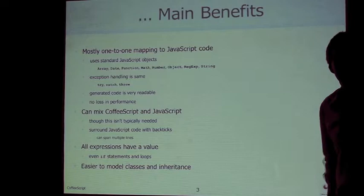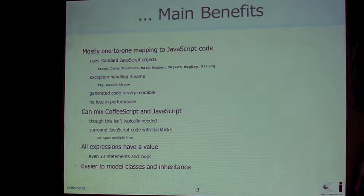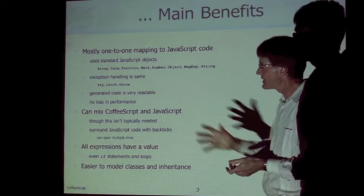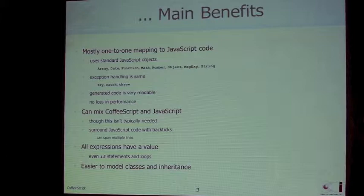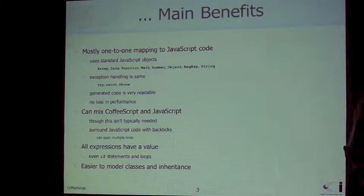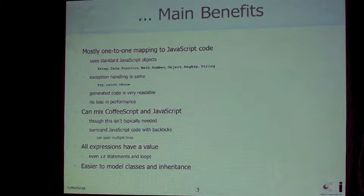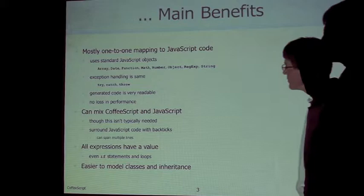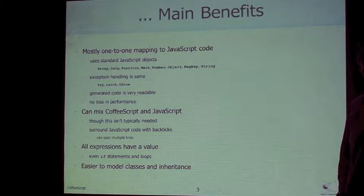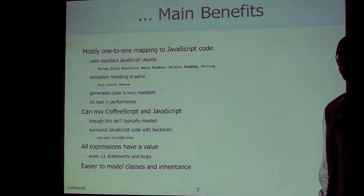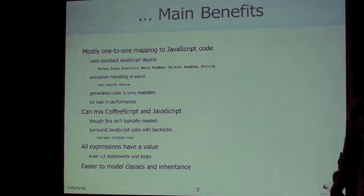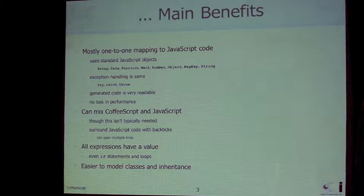A few other benefits: CoffeeScript has a one-to-one mapping to JavaScript using all the same core classes — array, date, function, string — all work the same way. Exception handling is the same. The generated code is very readable, which matters when you're debugging, because you'll be looking at JavaScript while stepping through a debugger. It maps pretty one-to-one so it's not too hard to figure out which CoffeeScript line generated which JavaScript. There's no loss in performance since compilation to JavaScript happens before runtime. If you need to, you can mix CoffeeScript and JavaScript code by putting the JavaScript inside backticks.